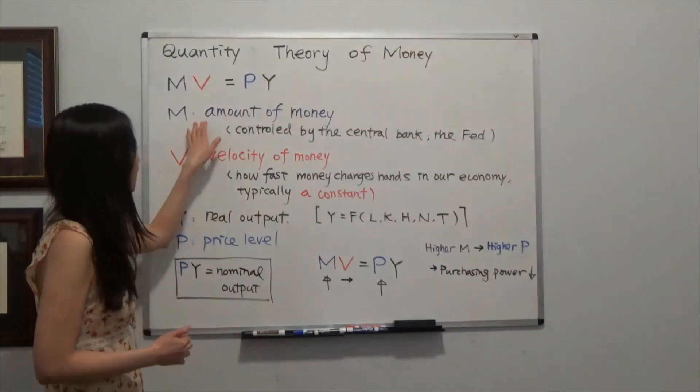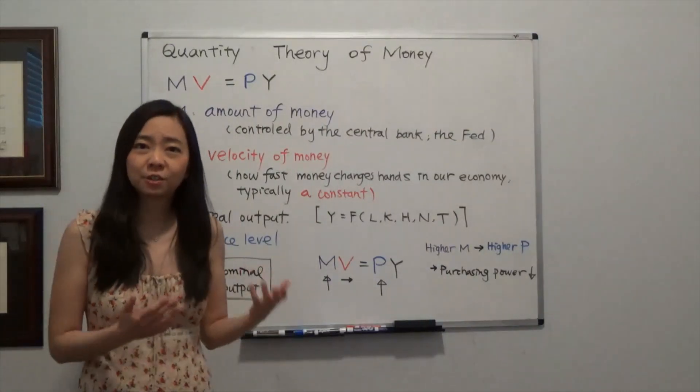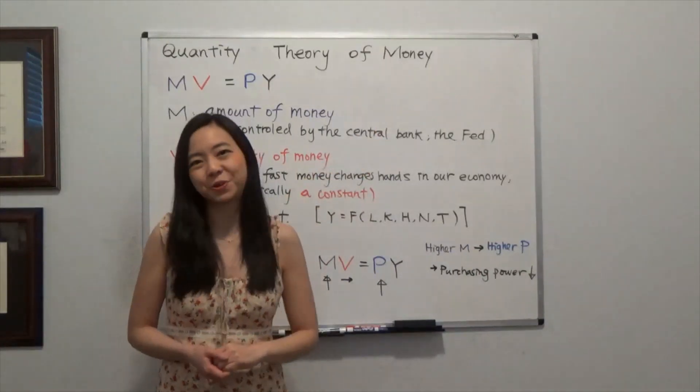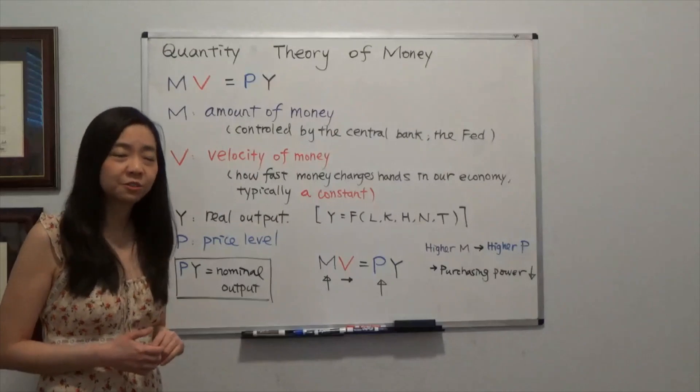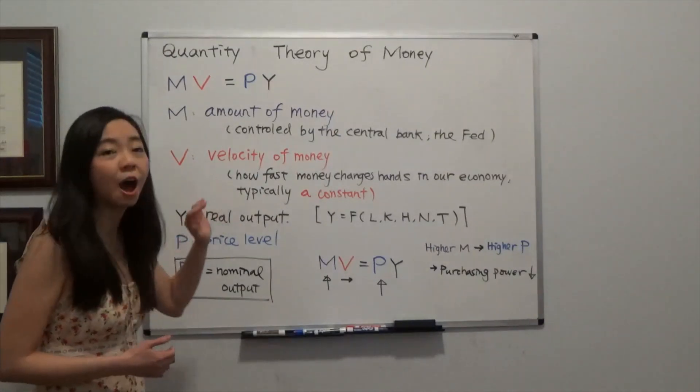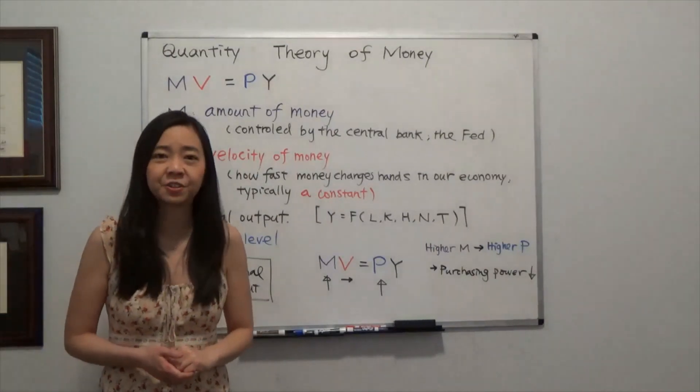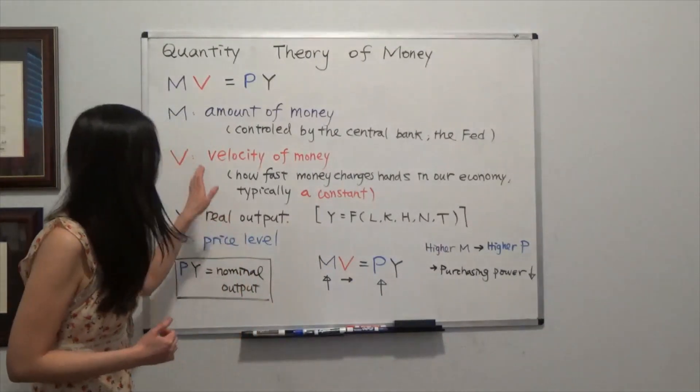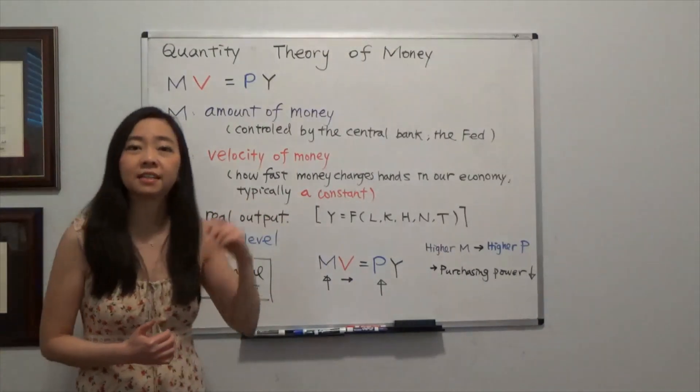M is the amount of money which is controlled by the central bank, and in the US, it will be the Federal Reserve. V stands for velocity of money, meaning how fast money is changing hands among the individuals in this economy. And typically, V is a constant that's very stable.